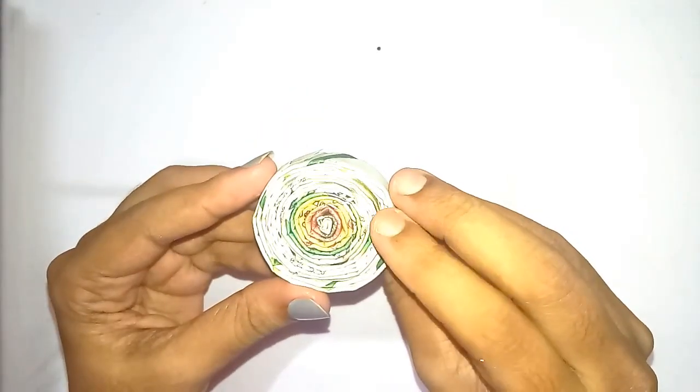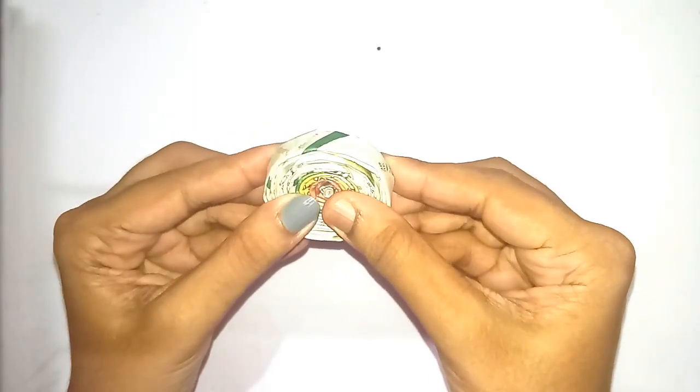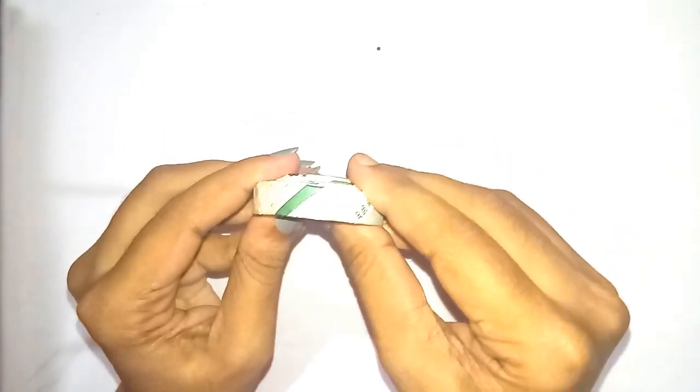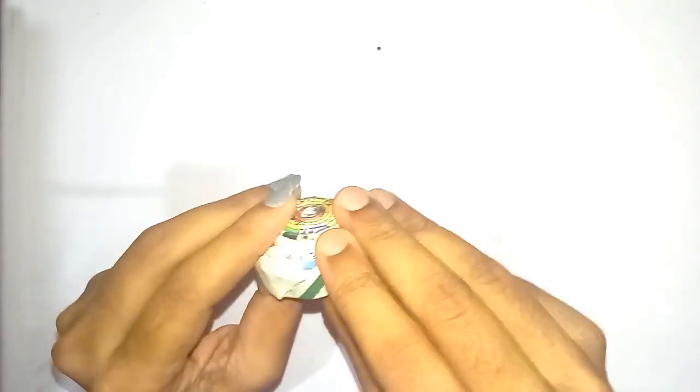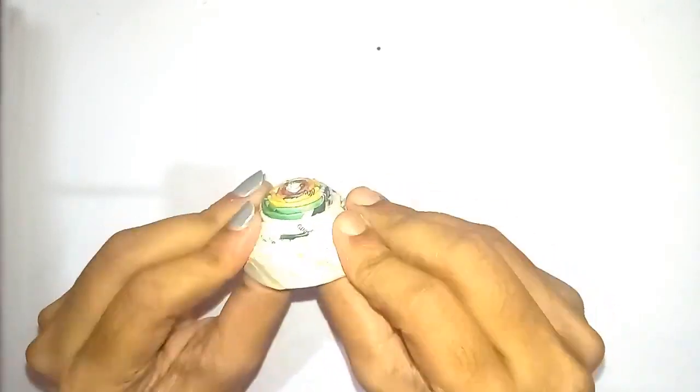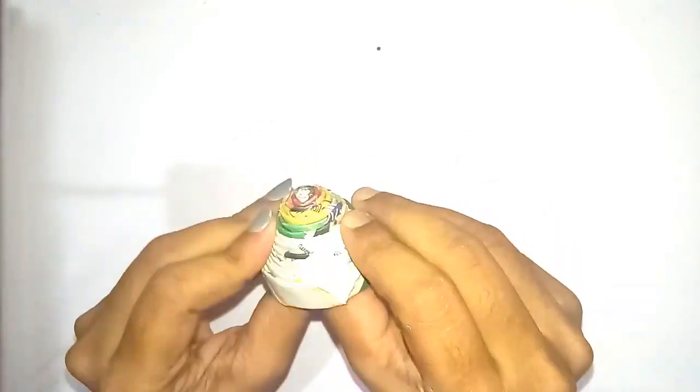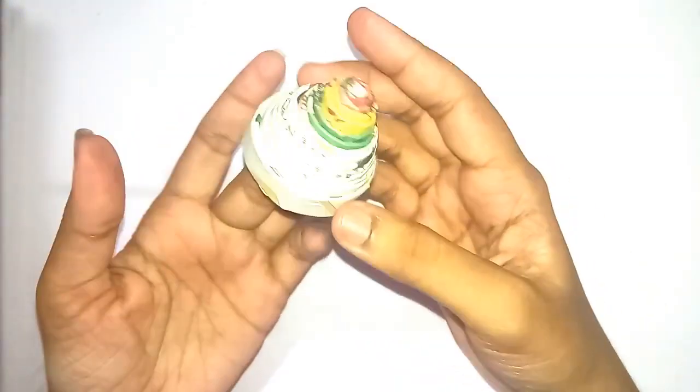After making the paper reel, you can slowly push the paper from one side to get a dome shape. You can do it very slowly and you have to push the paper from all the edges evenly.